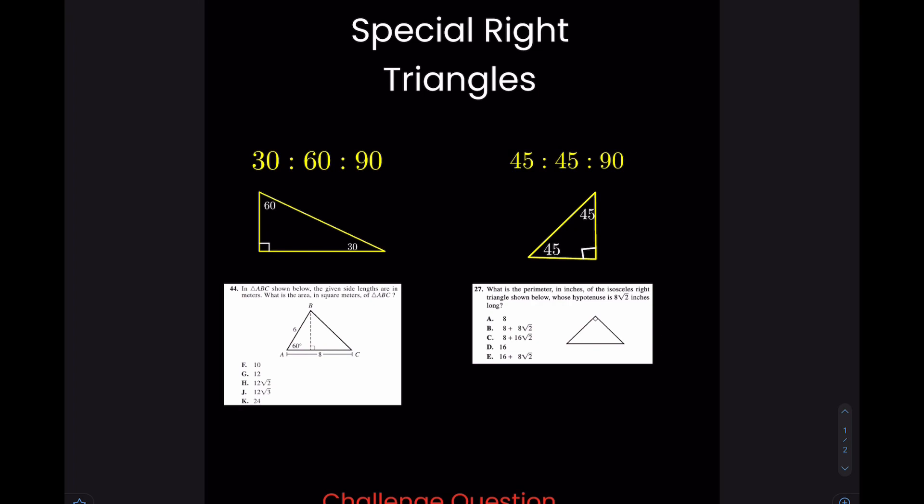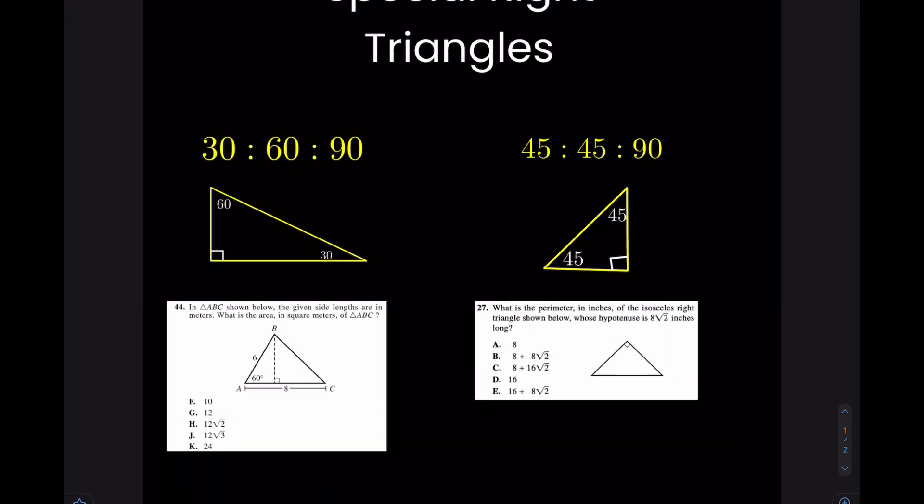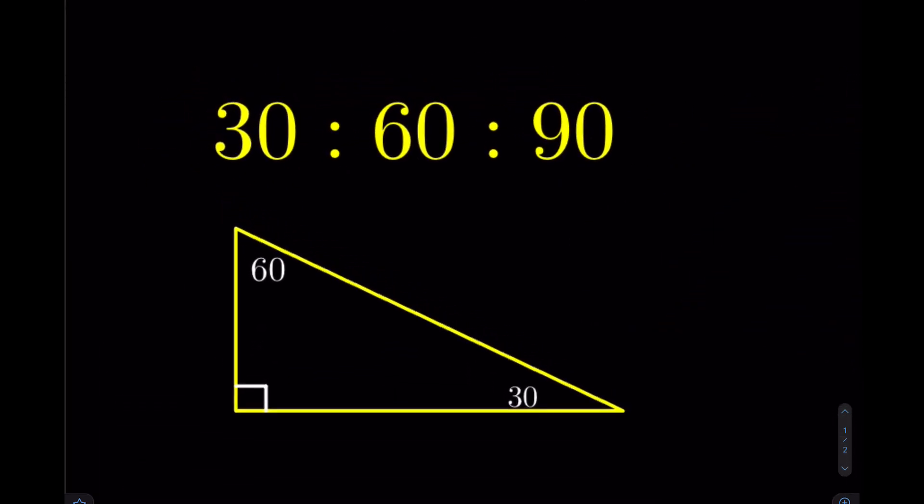So what are special right triangles? What are the ones that we really need to watch out for? As you can see on the screen, there's 30, 60, 90, and then 45, 45, 90.